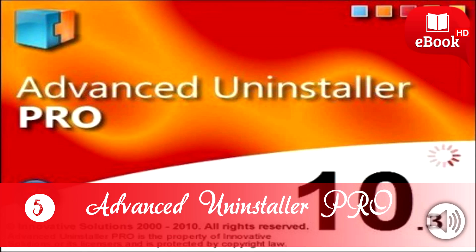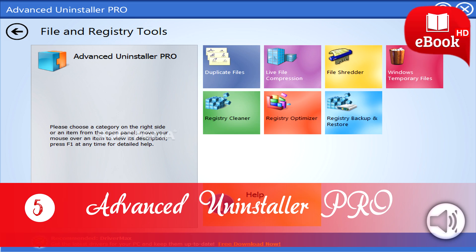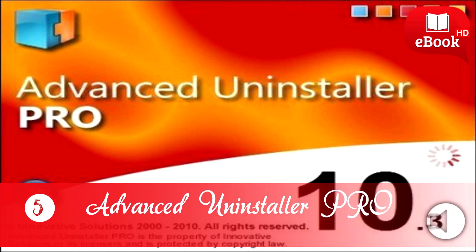5. Advanced Uninstaller Pro. Another free program remover is Advanced Uninstaller Pro. Common features like scanning for leftover registry items, context menu integration, and a search utility are included. A feature called monitored installations is also available, which takes a snapshot of your computer before and after a program install. This allows Advanced Uninstaller Pro to easily identify the changes an install made, thus allowing it to remove every single file that the program modified during its installation process. The only downside is that it can seem very cluttered with all the extra tools it has, such as a registry cleaner and file shredder. Both 32-bit and 64-bit versions of Windows XP through Windows 10 are supported.